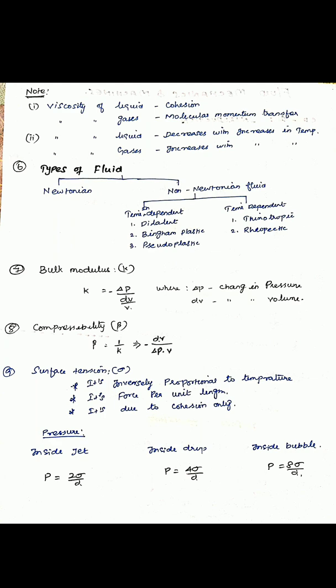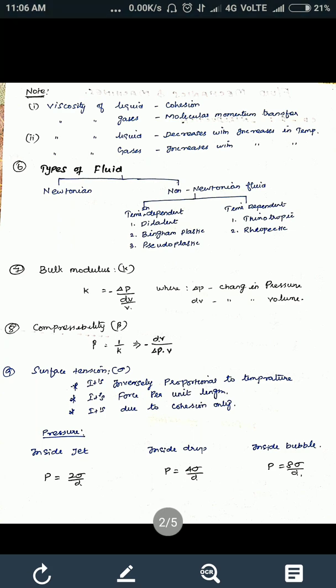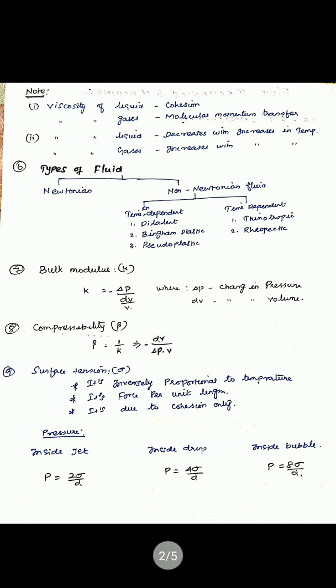Next formula: bulk modulus K equals change in pressure divided by change in volume over original volume. Next, compressibility equals 1 divided by bulk modulus.